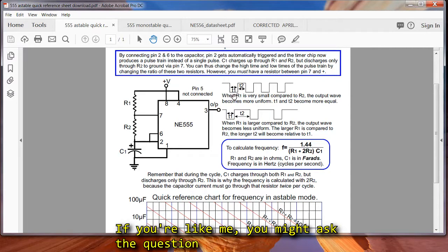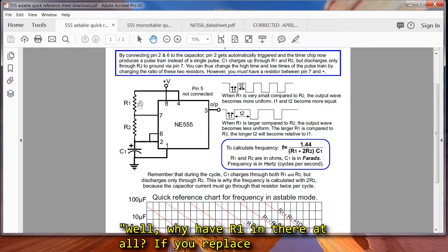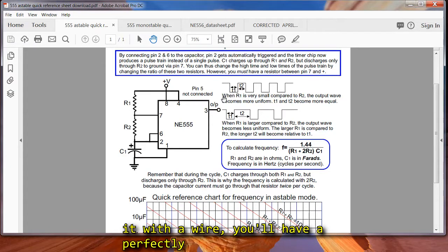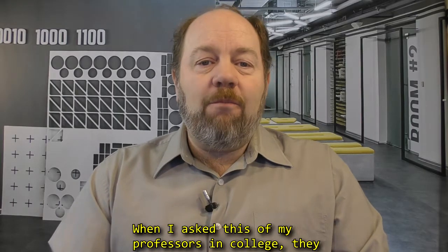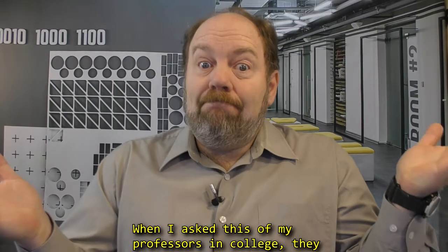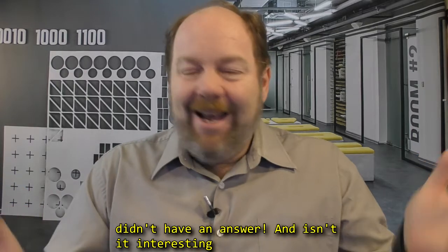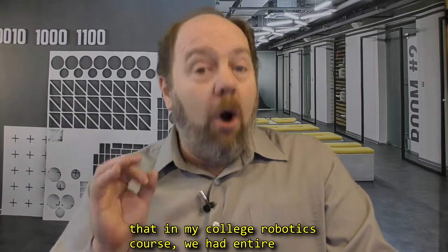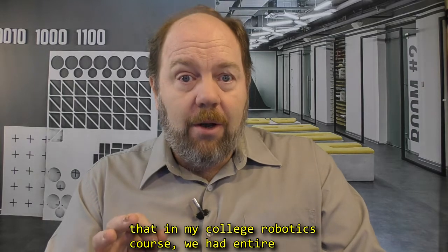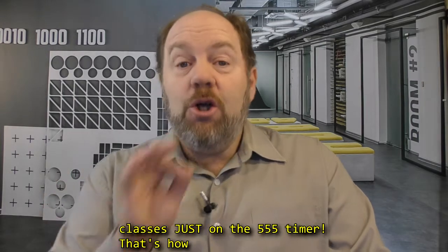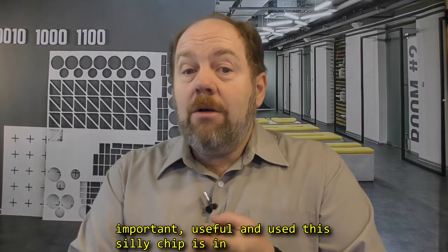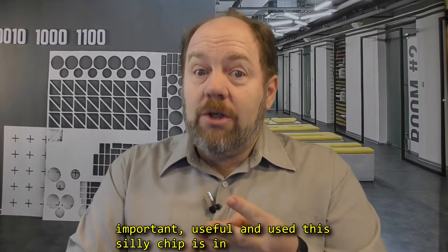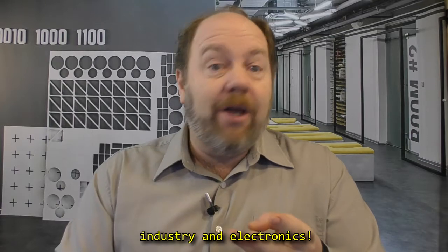Now if you're like me, you might well ask the question, well why do we have R1 in there at all? If you replace it with a wire, you'll have a perfect uniform square wave. And when I asked this of my professors in college, they didn't have an answer. And isn't it interesting that in my college robotics course, we had entire classes just on the 555 timer. That's how important, useful, and used this silly chip is in industry and electronics.